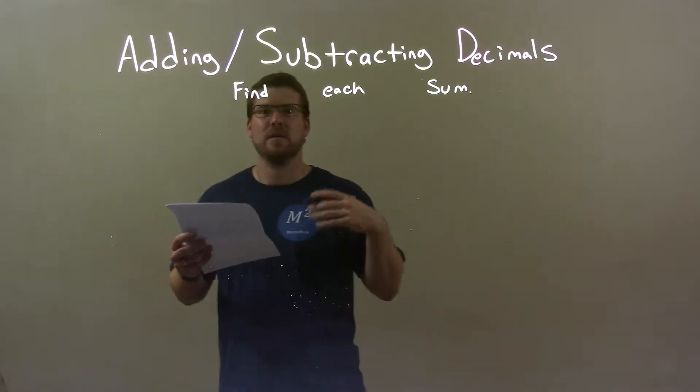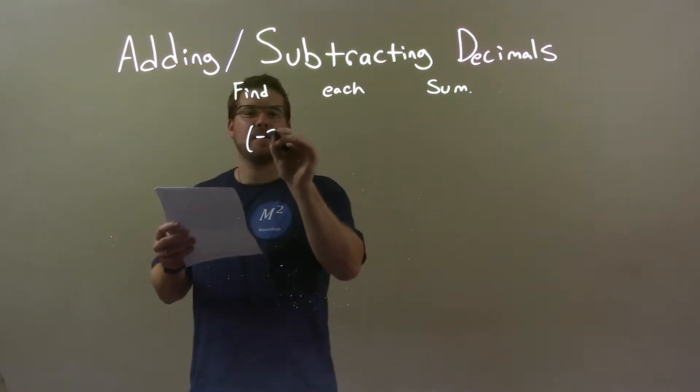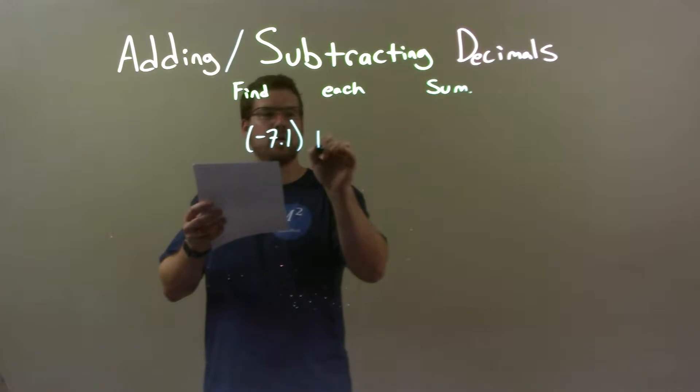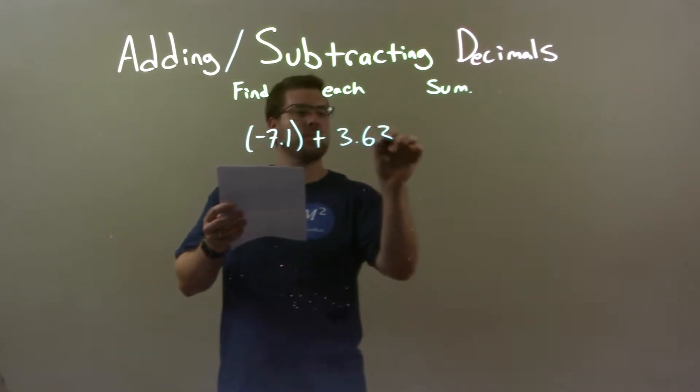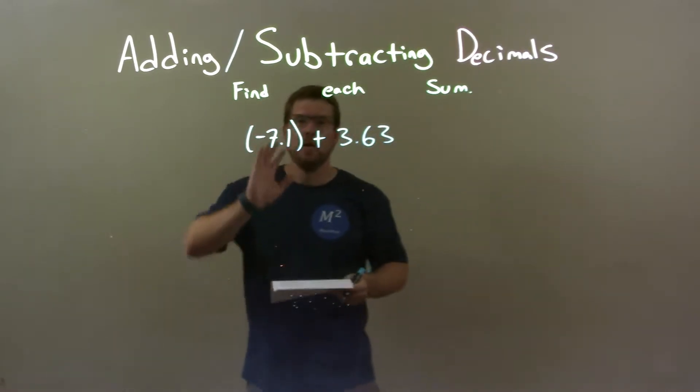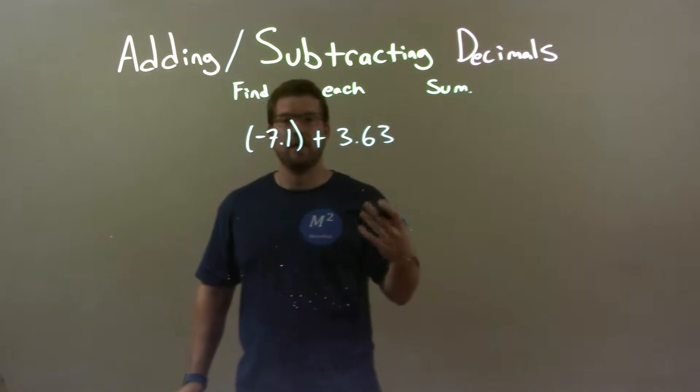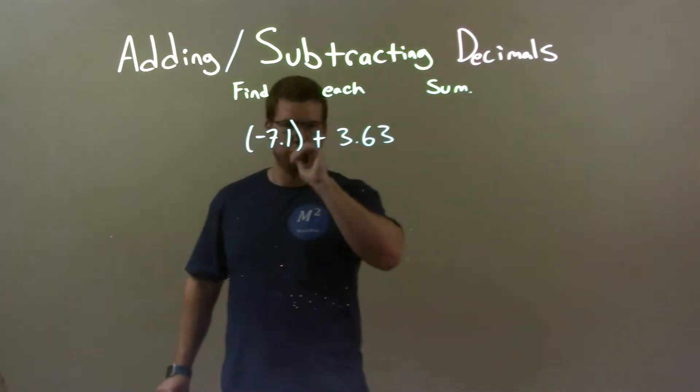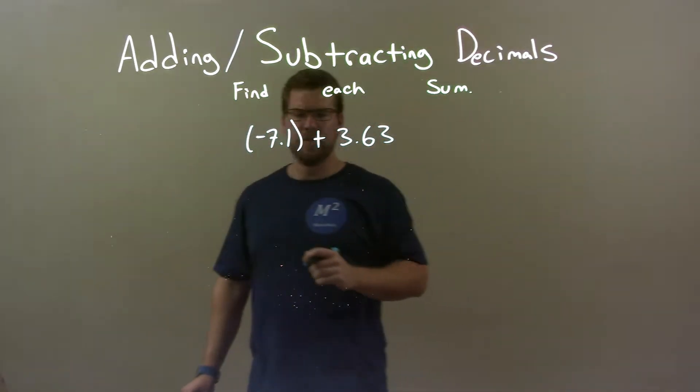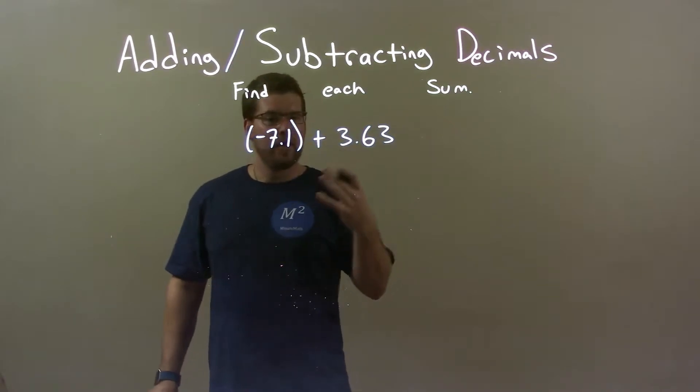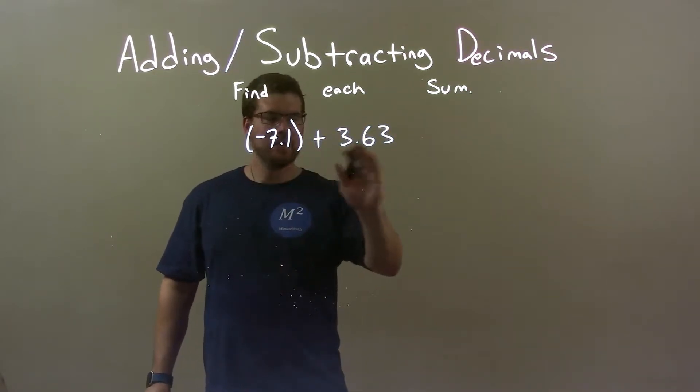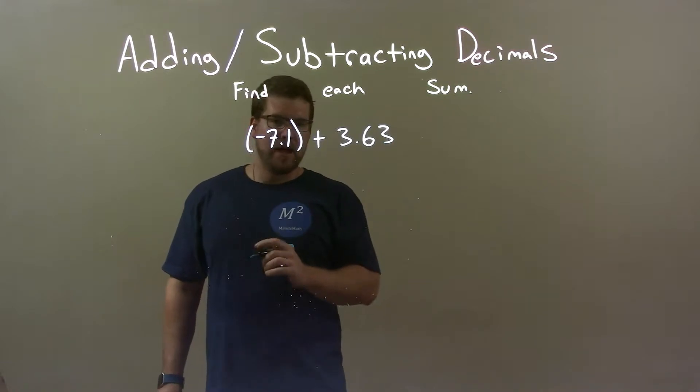So, if I was given these decimals, negative 7.1 plus 3.63. Alright, so where do I go from here? Well, this number, 7.1, the negative, is more negative than 3.63 is positive. So this is larger if you have the absolute value over it. So, with that, what I'm going to do, I'm just going to find the difference between these two, and know that my final answer has to be negative.